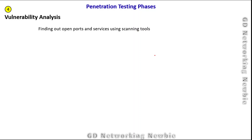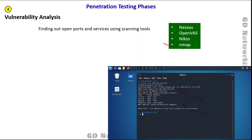The fourth phase is vulnerability analysis. Here we find open ports and services running on target machines using scanning tools such as Nessus, OpenVAS, Nikto, or Nmap. For example, using Nmap to scan a computer by IP address reveals which ports are open and which services are running. We also evaluate exploits against those vulnerabilities — assessing whether they will be successful or encounter problems.